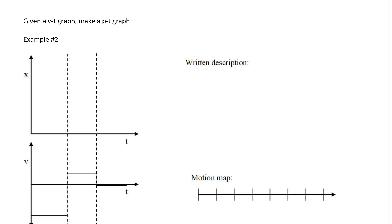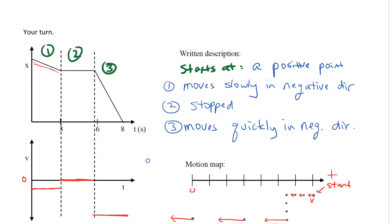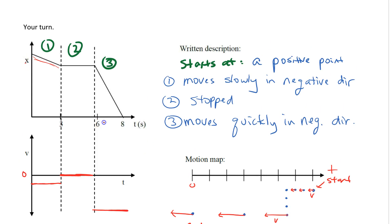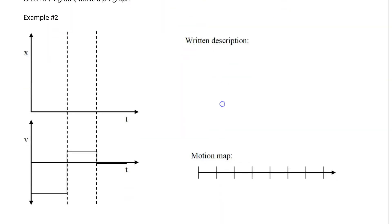Welcome to this video. We're going to finish off where we started. We had a little bit of practice previously with position-time graphs — making a written description, a motion map, and a velocity-time graph. Now we're going to reverse it: what if we're given a velocity-time graph?